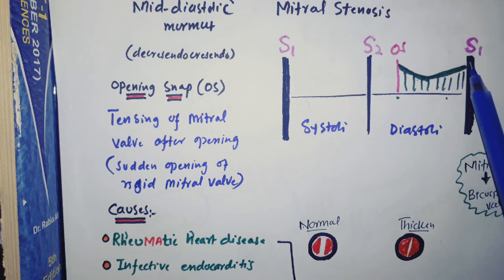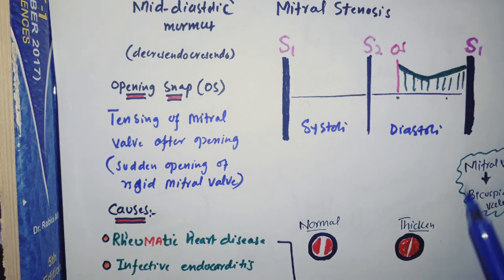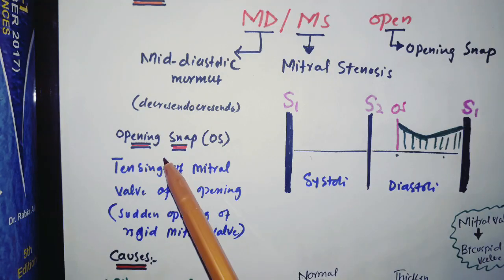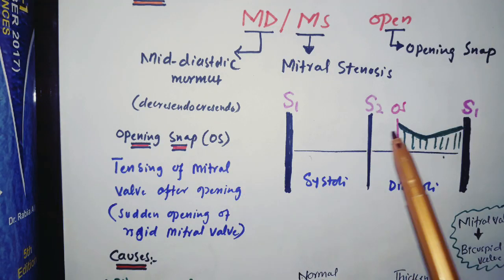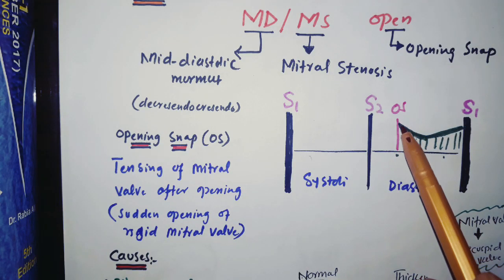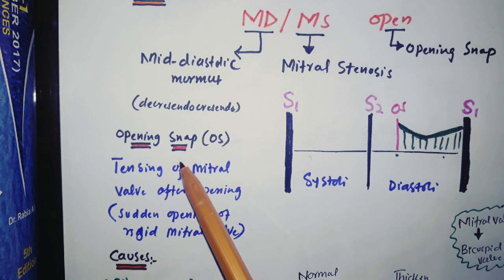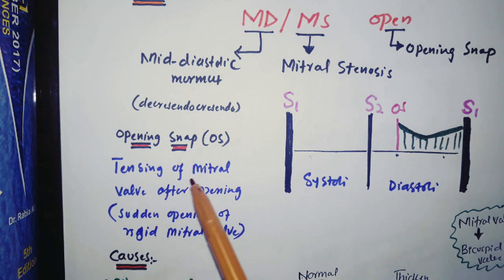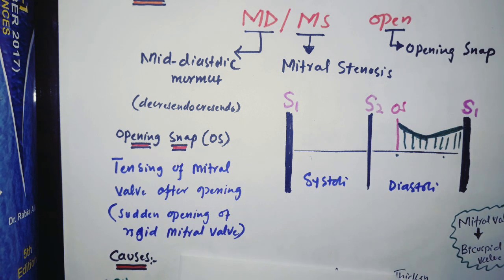This means there will be a loud S1. Loud S1 is seen in mitral stenosis along with an opening snap. What does opening snap mean? It is the tensing of the mitral valve after opening.